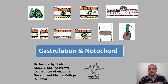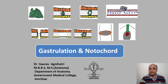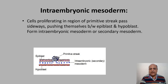Hello students, welcome to my class on gastrulation and notochord. We have done the pre-organogenesis period, that is the first 14 days of pregnancy, and now we come to the embryonic period, that is from the third week to the eighth week. First of all, we will do the formation of the three germ layers.